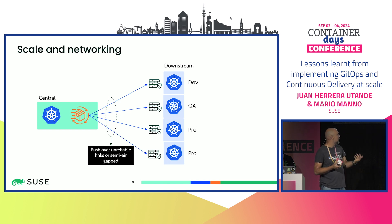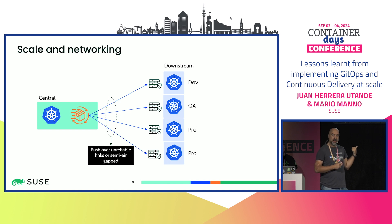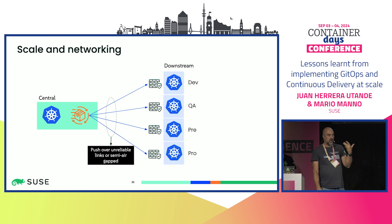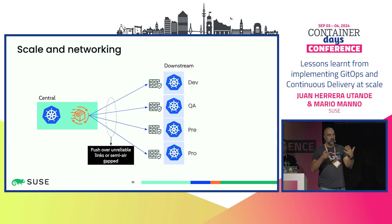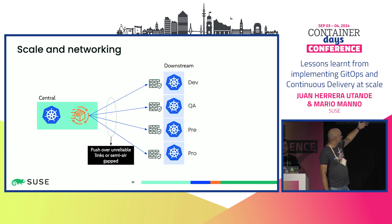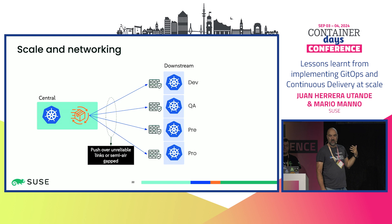From a networking perspective, the industrial customer faces huge challenges because many locations are semi-air-gapped — factories that only call home regularly, maybe once a month or once a week, to ask for updates. You don't control the link, so clusters can appear unavailable, generating false positives. This comes from the fact that in the hub-and-spoke model, communication flows from central to downstream. We need to invert that communication to be able to scale.